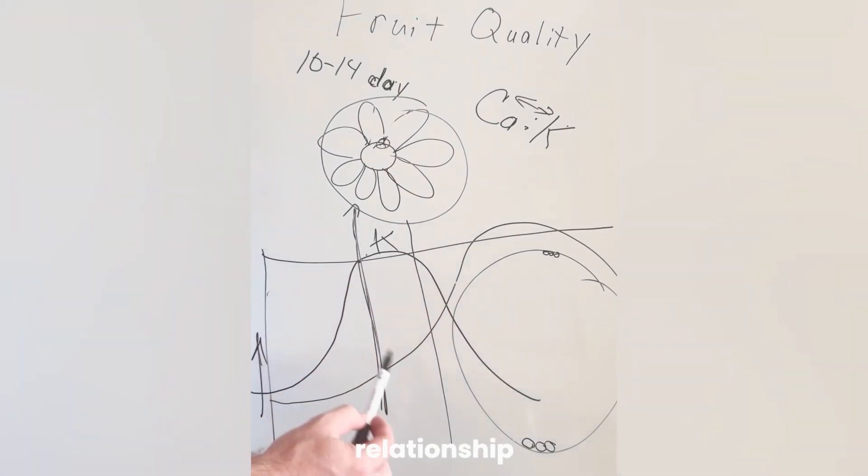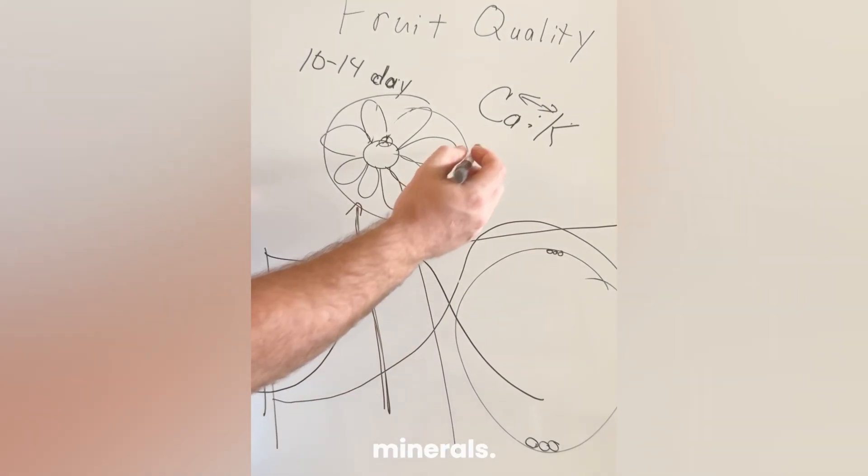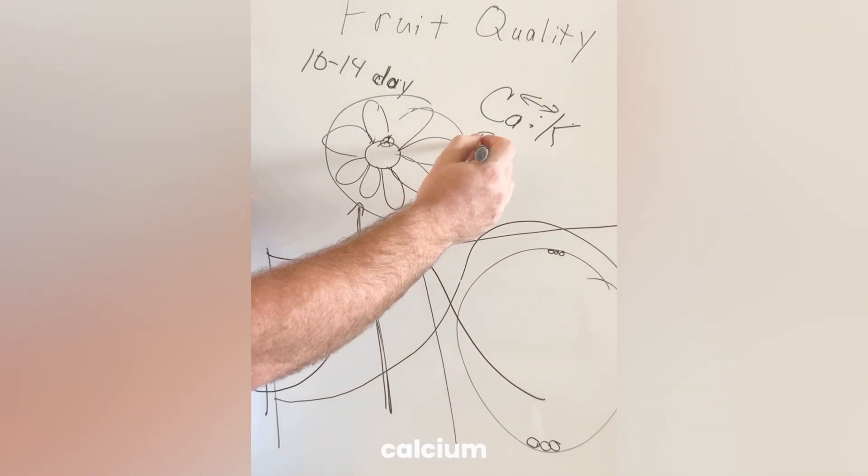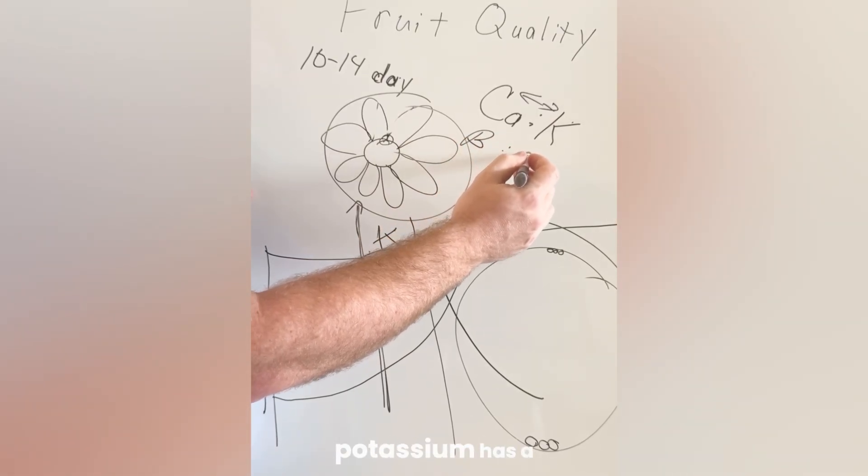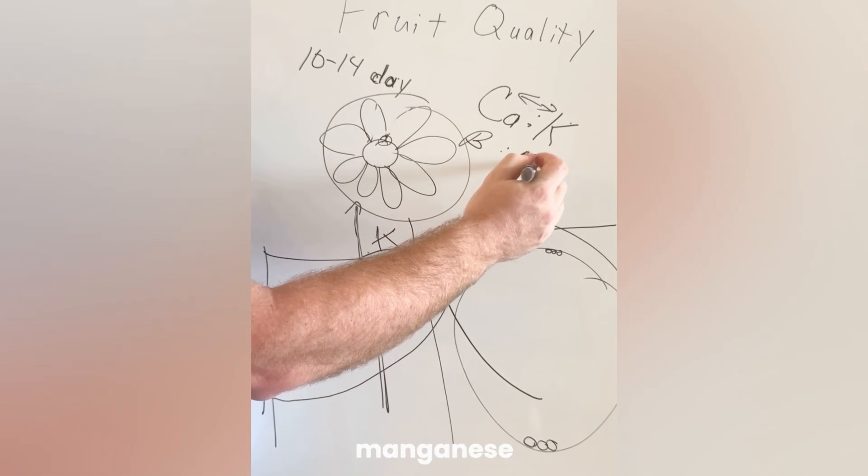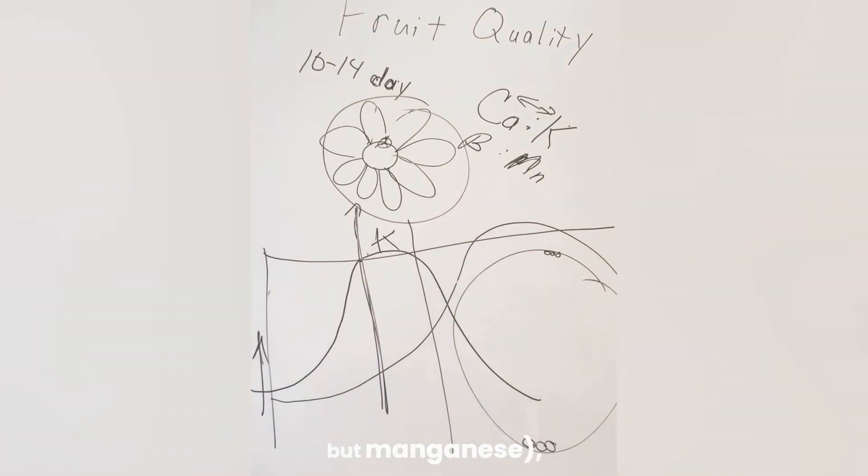And so the key to managing that relationship is with trace minerals. Calcium has a synergistic relationship with boron. Potassium has a synergistic relationship with manganese, not magnesium but manganese.